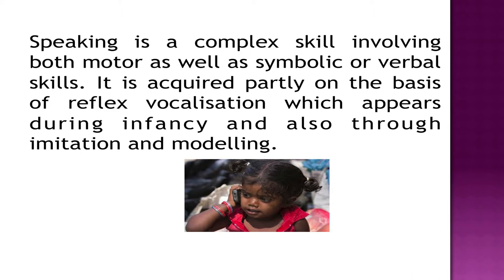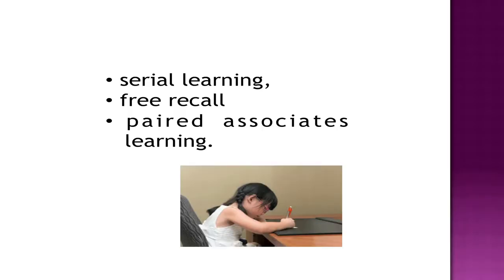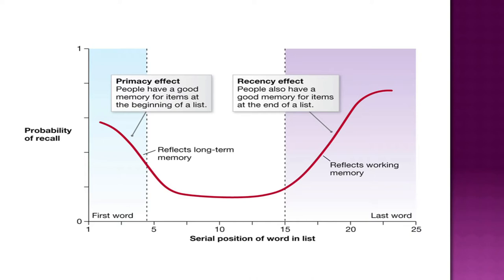It is acquired partially on the basis of reflex vocalization which appears during infancy and also through imitation and modeling. While studying verbal learning, psychologists use a number of methods for presenting the material. They include serial learning, free recall, and paired associates learning. In serial learning, the learner is asked to recall in the way the words were presented. Free recall requires the learner to recall the words without regard to their order of presentation. In paired associates, the verbal material is presented in pairs, such as 'crat-book'.